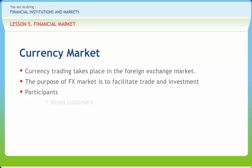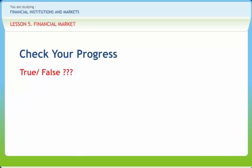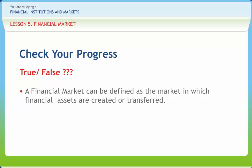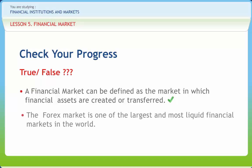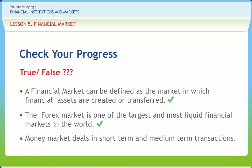Participants in currency market are retail customers, foreign exchange dealers, FE brokers and central banks. Now let us check if we have understood the various concepts discussed in this lesson. A financial market can be defined as the market in which financial assets are created or transferred — Right. The Forex market is one of the largest and most liquid financial markets in the world — Right. Money market deals in short term and medium term transactions — Wrong.